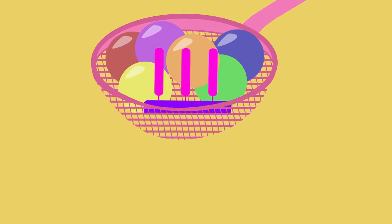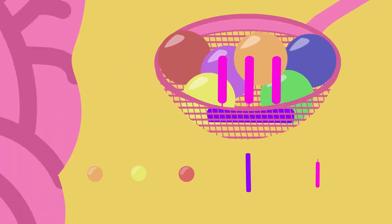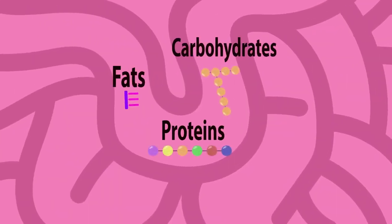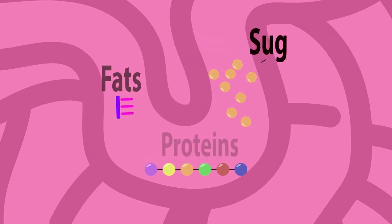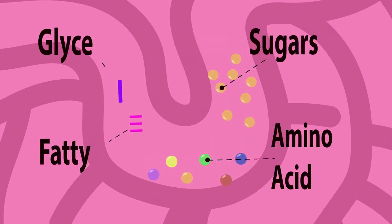The small intestine is kind of like a sieve. It has small holes in it. Small molecules are able to pass through those holes, whereas large molecules cannot. So carbohydrates, proteins, and fats are all too large to pass through the holes in the small intestine.